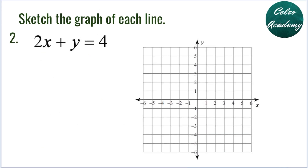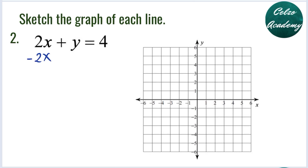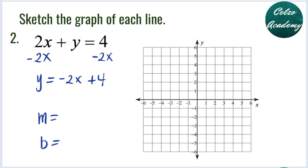Question number 2: 2X plus Y is equal to 4. Isolating the variable Y, step 1 is to subtract 2X from both sides. 2X minus 2X is 0, so we have Y is equal to negative 2X plus 4. It is now in the form Y equals MX plus B. The Y-intercept is 4 and the slope is negative 2, or negative 2 over positive 1.